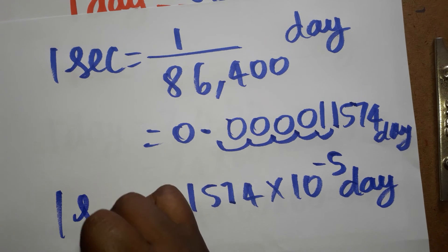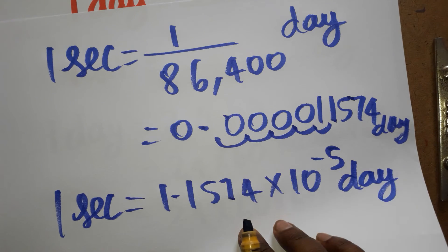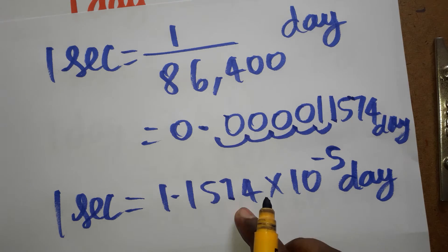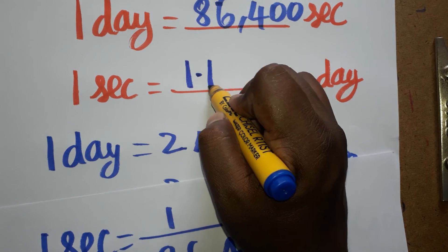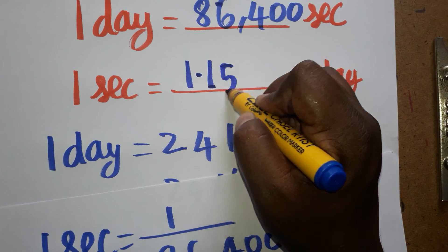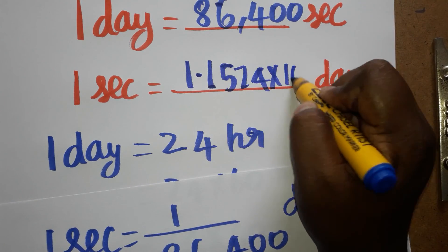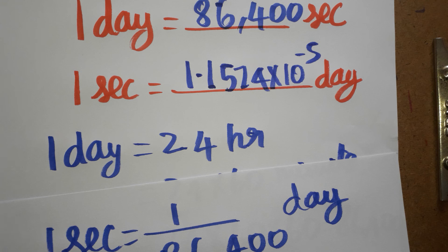So 1 second is 10 power minus 5, or 1 second is 1.1574 into 10 power minus 5 day. So that only I'm going to write here: 1.1574 into 10 power minus 5 days.